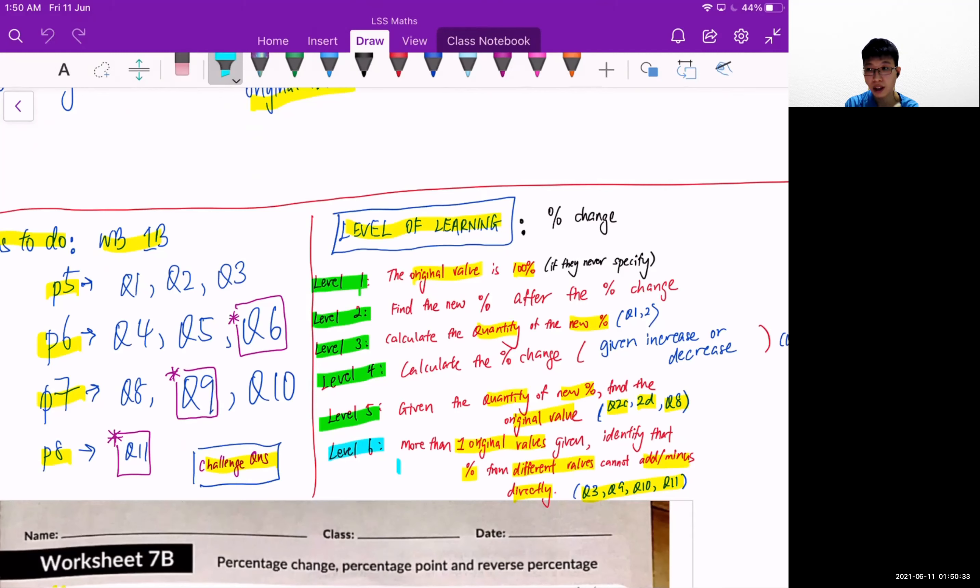For example, 5% increase in the electricity bill - I cannot find the total percentage increase by taking 3% of the water bill and adding them together for 5 plus 3 equals 8. It's not possible because both of them are two different things. Their original values are different as well.